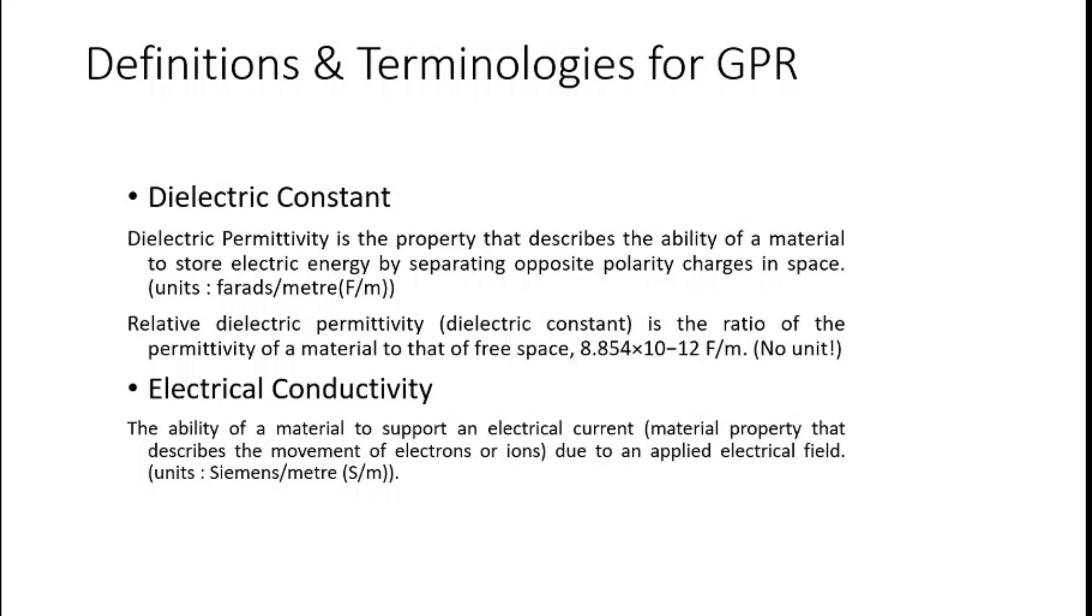Some parameters that we have to know before digging into the technology of GPR. One is the dielectric constant. Dielectric constant or permittivity is a property that describes the ability of material to store electric energy by separating opposite polarity charges in space. Its unit is farad per meter. We don't go for the dielectric constant but we go for the relative dielectric constant or permittivity. Basically it's the ratio of permittivity of material to the free space, and there is no unit for the relative dielectric permittivity.